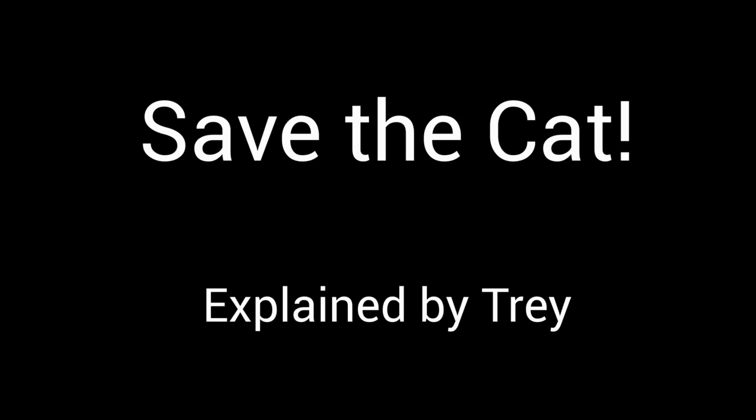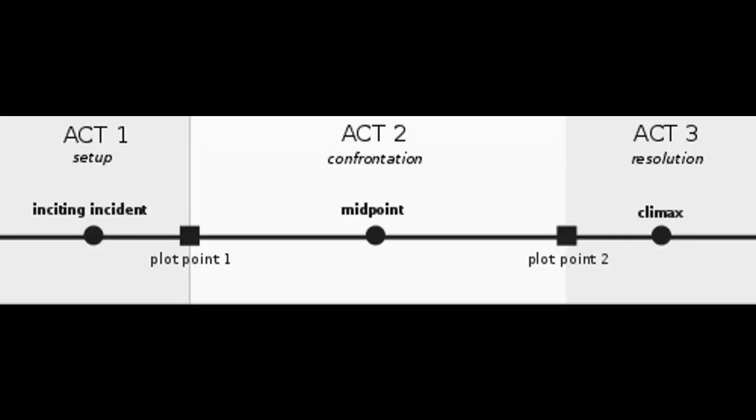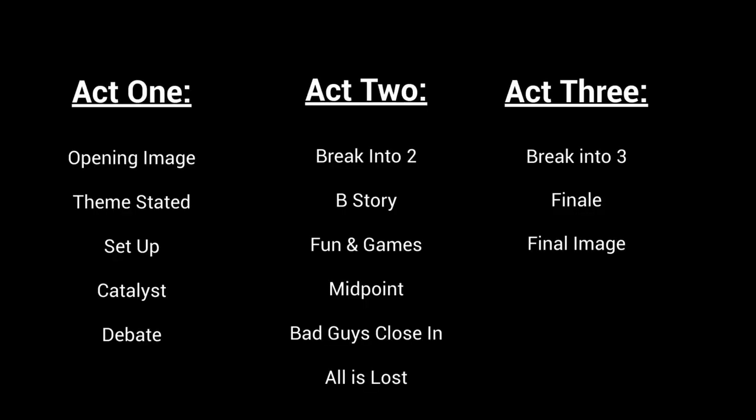The Save the Cat Story Guide is a deep dive into the three-act structure, which is composed of three acts and 15 plot beats.